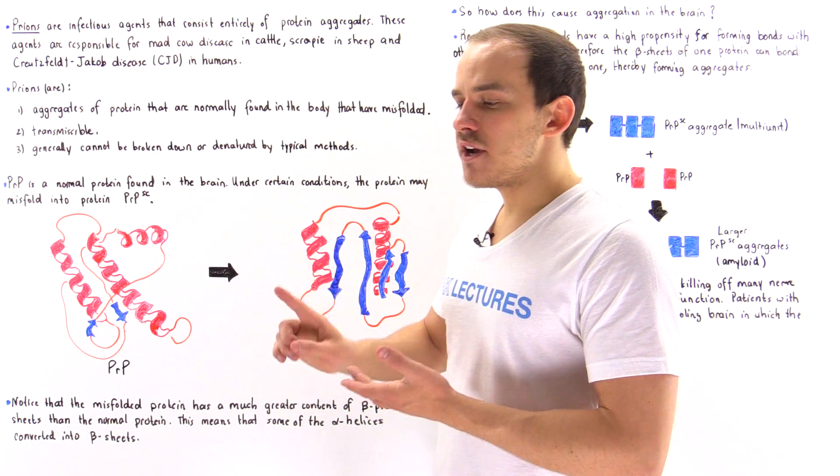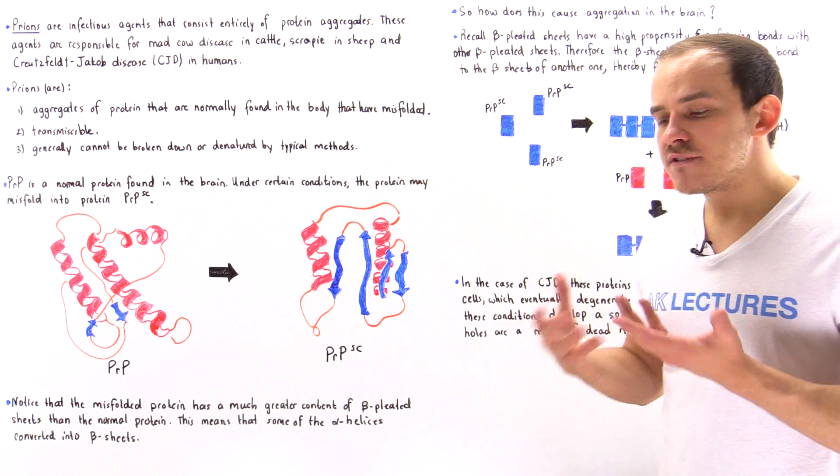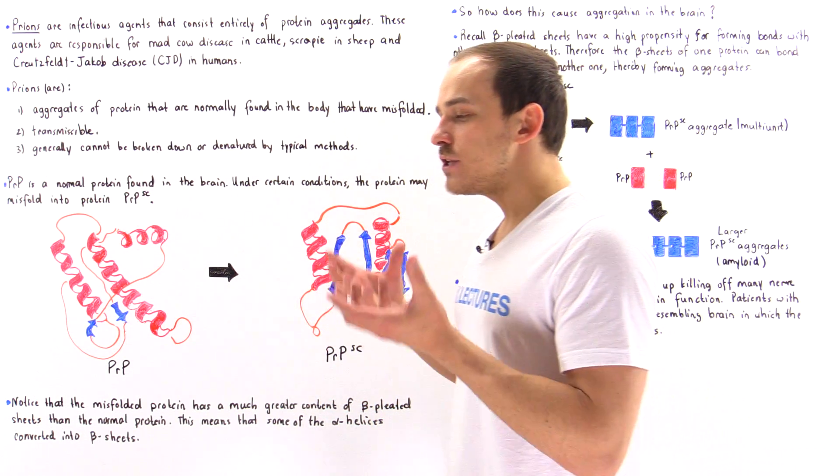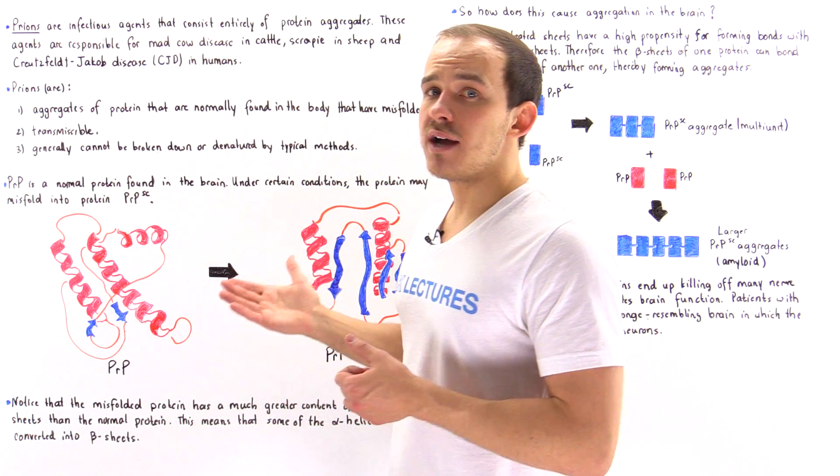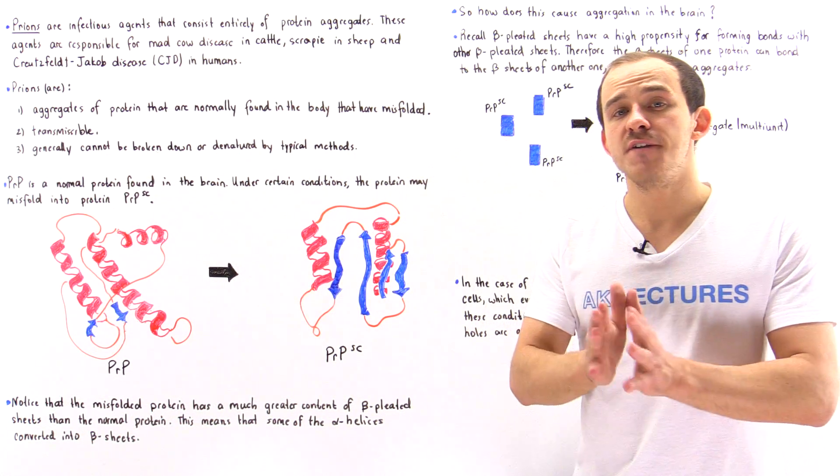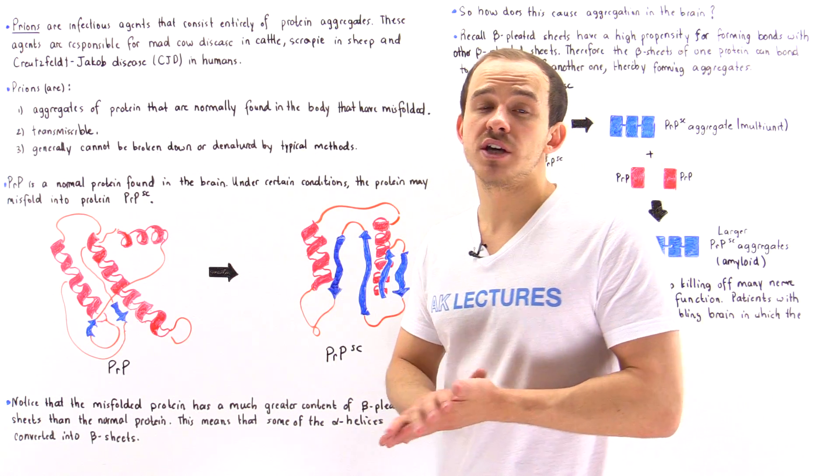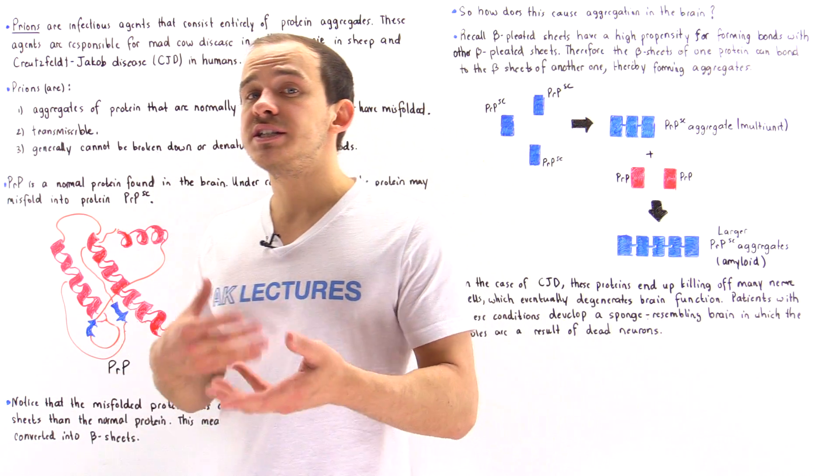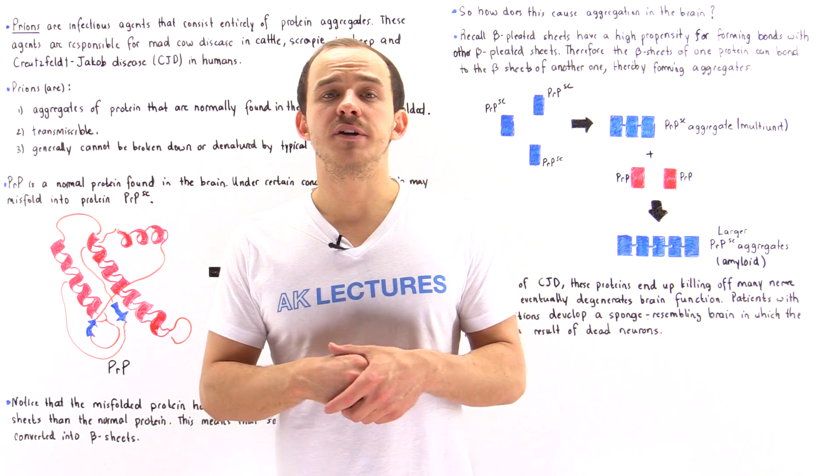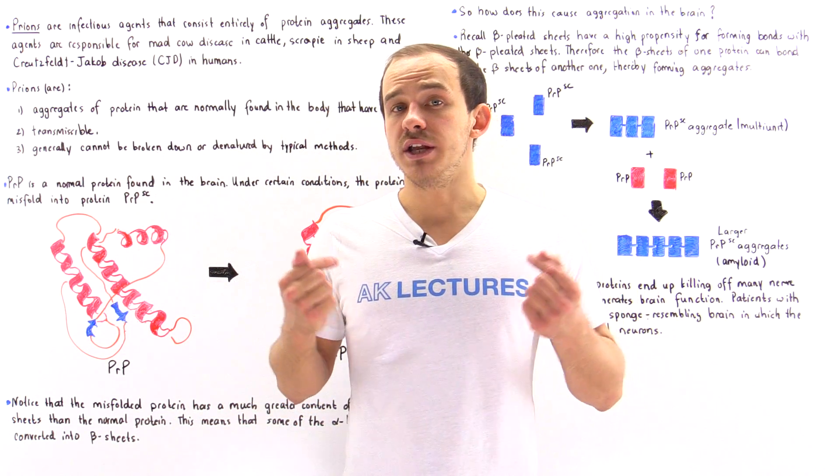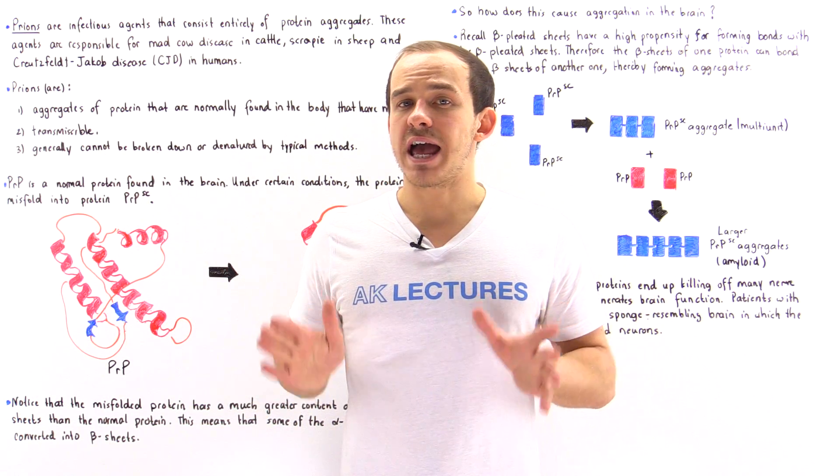In some very rare cases, these misfolded proteins can actually form biological molecules we call prions. Prions are very dangerous molecules, as we'll see in just a moment. They are infectious agents that can cause a variety of diseases not only in humans but also in other animals.